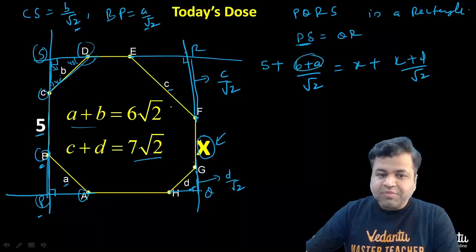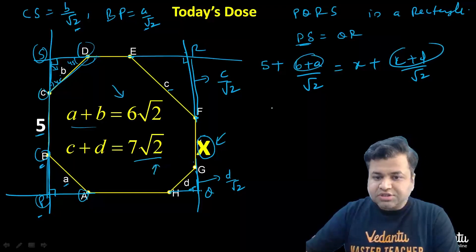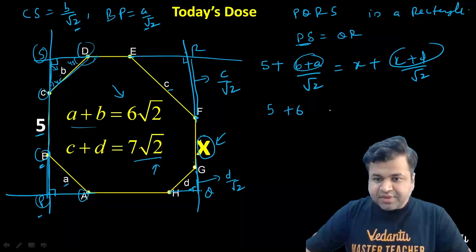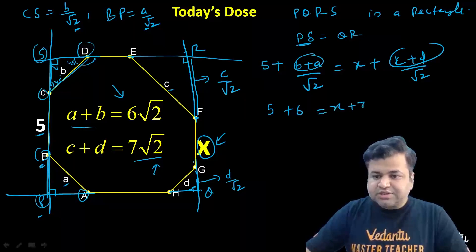Now we are given with the value of A plus B which is 6 root 2, and C plus D which is 7 root 2. Now just substitute these values. So we will get 5 plus 6, that should be equal to X plus 7. That means X should be 4.